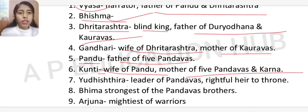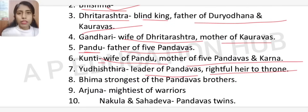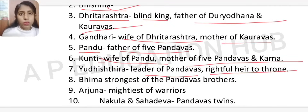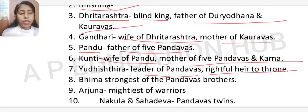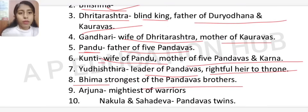Yudhishthira is the leader of the Pandavas and the rightful heir to the throne — the eldest son of Pandu. Bhim is the second son of Pandu and the strongest of the Pandava brothers. Arjun is the mightiest warrior among them.